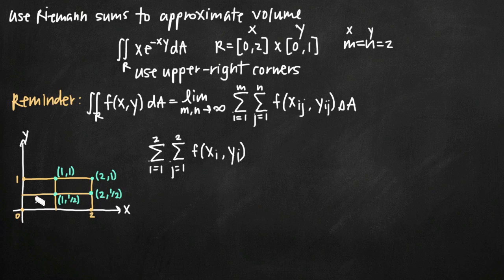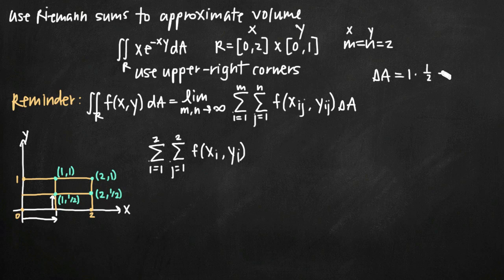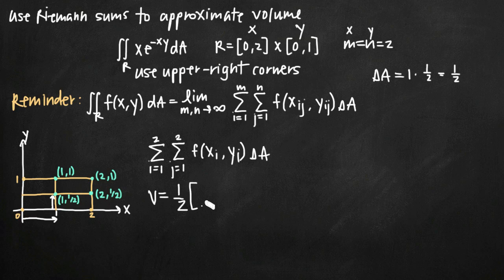Looking at our lower left-hand rectangle, the width goes from x = 0 to x = 1, so the width is 1. The height goes from 0 to 1/2, so the height is 1/2. That rectangle is 1 by 1/2, and this is the same for all four rectangles. So delta A equals 1 times 1/2, which is 1/2. We'll multiply each coordinate point plugged into our function by delta A, so volume equals 1/2 times the sum of the function values.